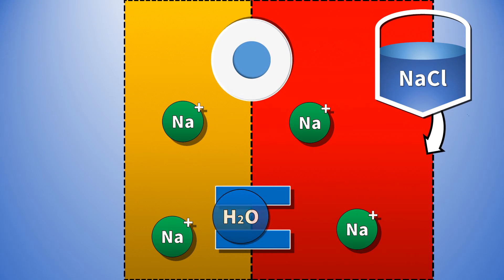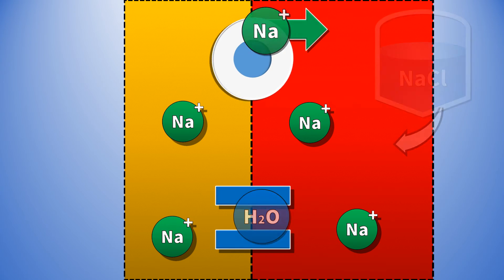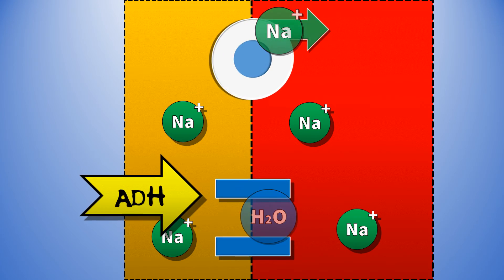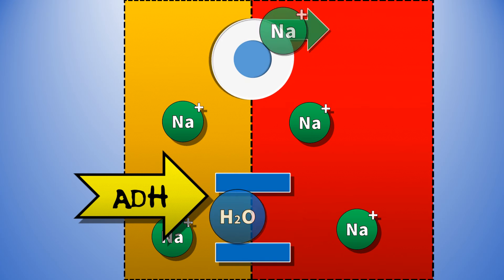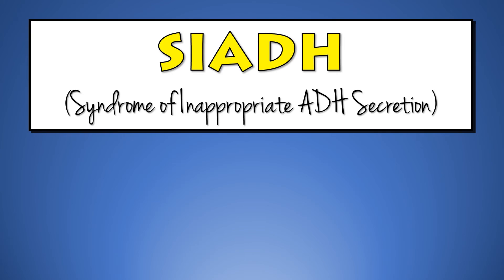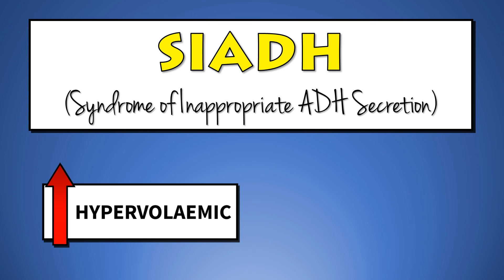Let's say you rehydrate this person, but their hyponatremia doesn't resolve with fluid resuscitation and their urine remains concentrated. This suggests that the response of ADH is not physiological. You're looking at SIADH — the Syndrome of Inappropriate ADH Secretion. Click here to find out more about SIADH, or here to find out more about hyponatremia in hypervolemic patients.